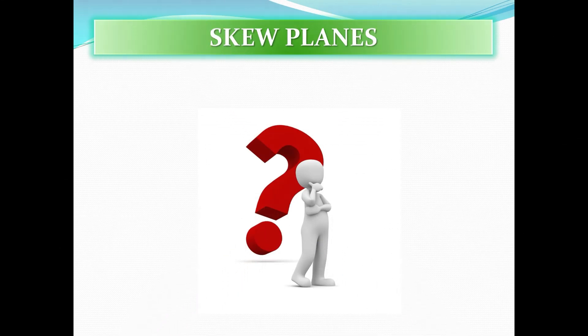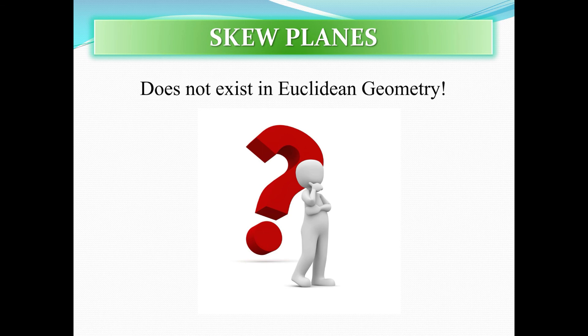What about skew planes — planes that do not intersect and are not even parallel? It turns out that in Euclidean geometry, such planes do not exist. Now that we've covered the basics for planes and lines, let's get into more detail about how planes interact with each other.